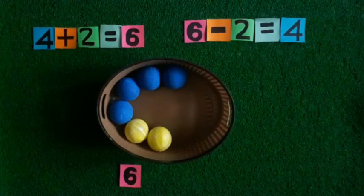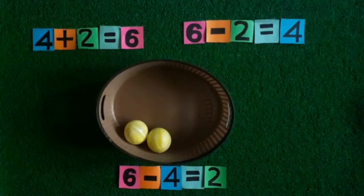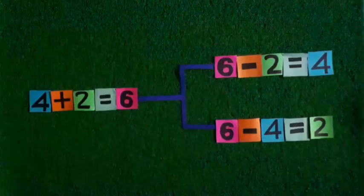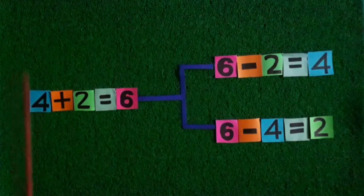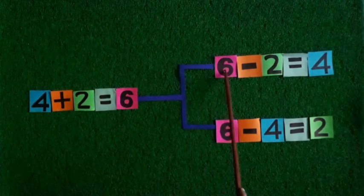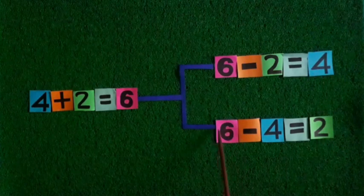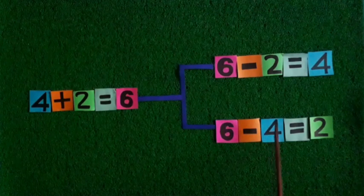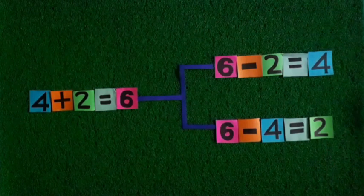Kids, you can see there are six balls. When I take four balls from the basket, then how many balls are left in this basket? Listen carefully. When we add four and two, we get six. When we subtract two from six, we get four. And when we subtract four from six, we get two. You can see these are inverse operations.